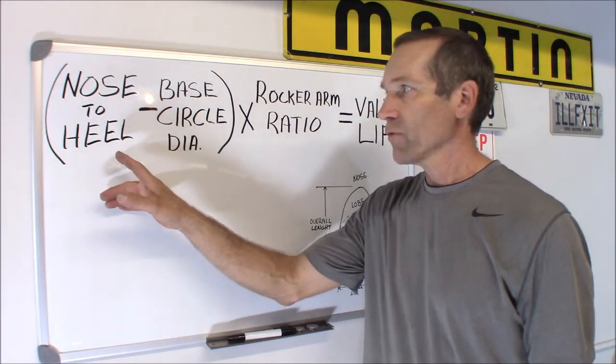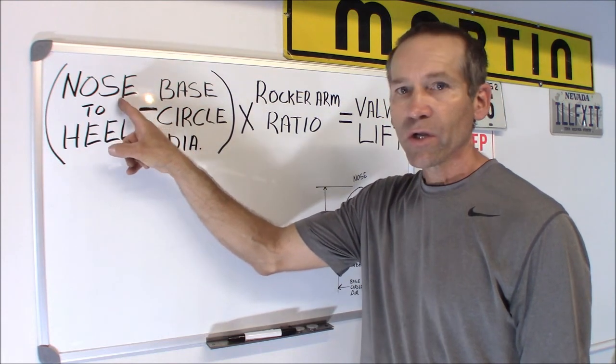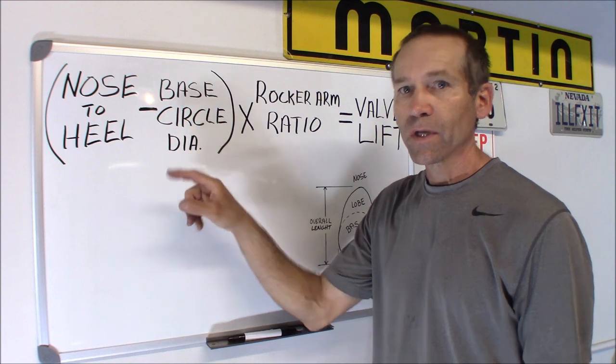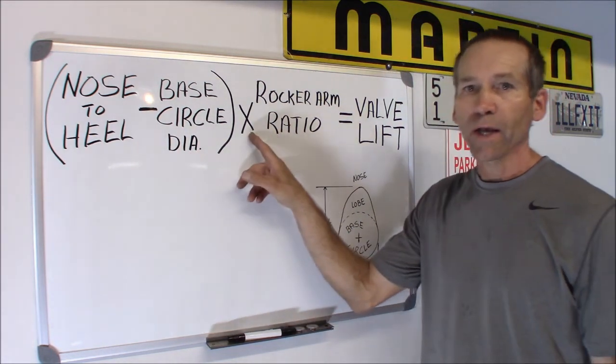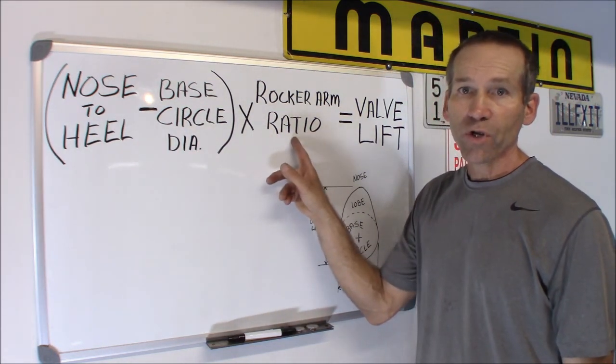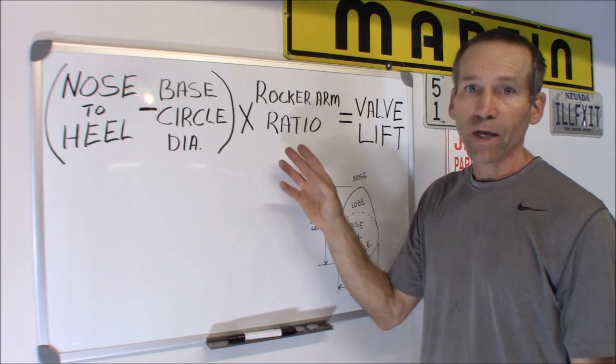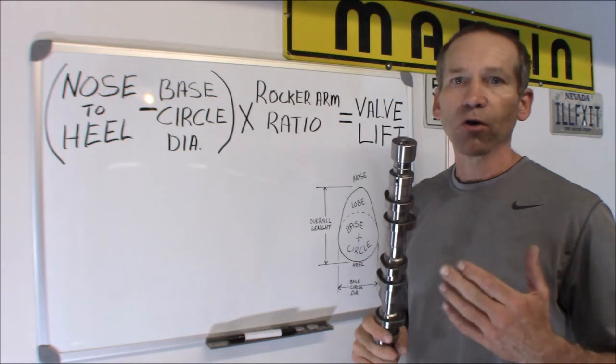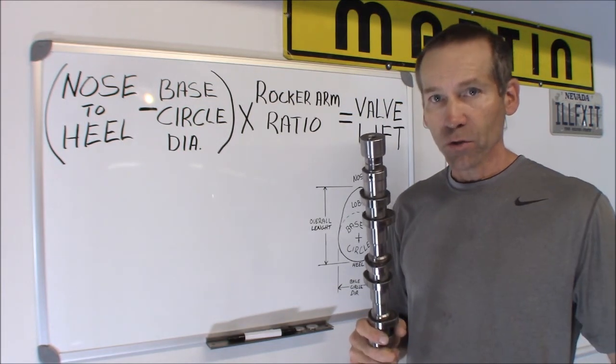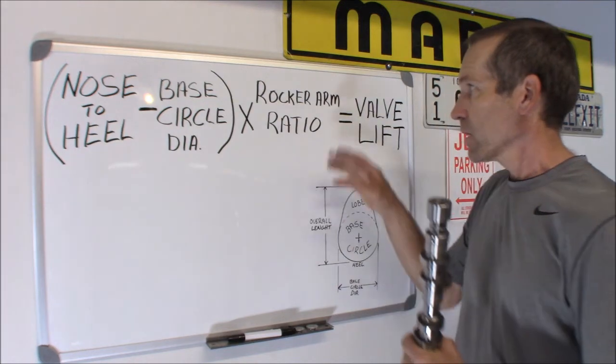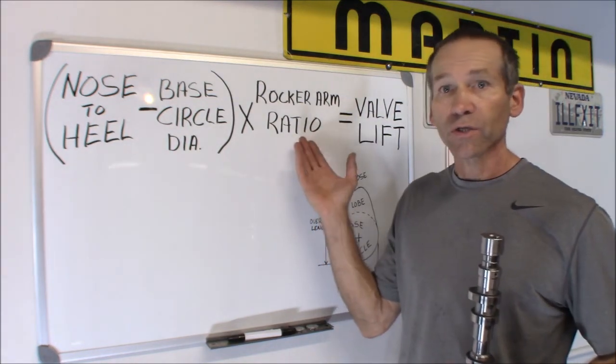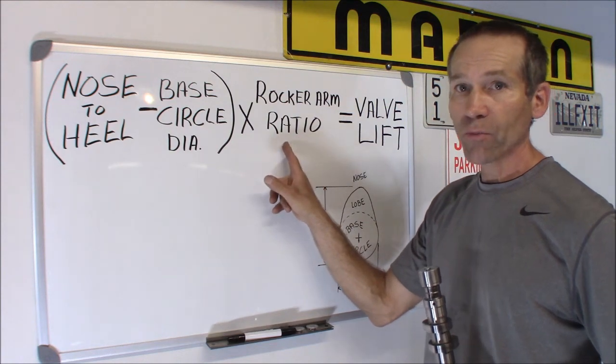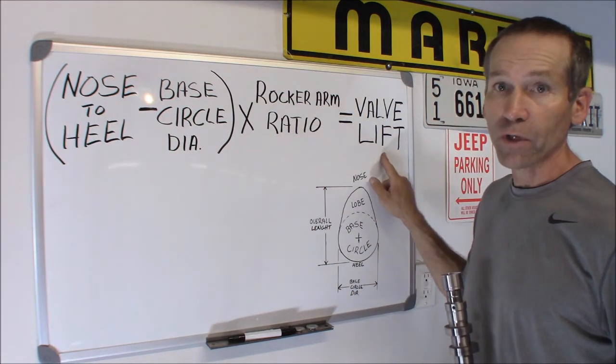And then the mathematical part of it is you're going to take that first measurement, nose to heel, minus your base circle. And the sum of that, you're going to multiply it by your rocker arm ratio. You're going to need to know what that is. And for the purposes of this video, we're using the 4.7 liter Chrysler motor. And I know the rocker arm ratio is 1.85 to 1 times the rocker arm ratio, and that's going to equal your valve lift.